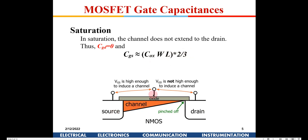In saturation, the gate-to-source capacitance is (2/3)·COX·W·L and CGD is zero. The channel pinch-off means the channel is not rectangular but tapered, like a triangle, so this is a rough approximation used for hand calculations.